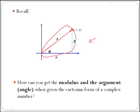Right, how can you get the modulus, which is r, and the argument or angle, which is theta in this case, when given the Cartesian form of a complex number, which means if x and y are known.